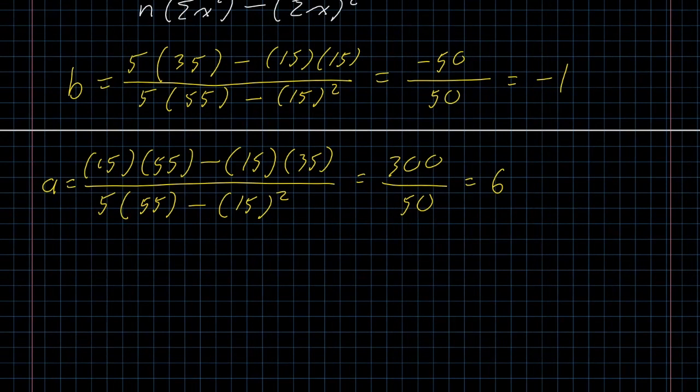Now that we have our values of A and B, we said that y was going to be equal to A plus Bx. In this case, y equals 6 minus x. Fairly straightforward relationship.